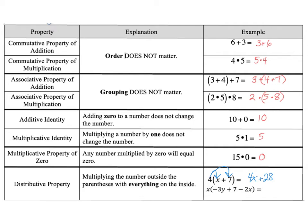We've got three terms on the inside. So that means our x on the outside is being multiplied three times. So x times negative 3y is negative 3xy. x times positive 7 is positive 7x. And then x times negative 2x is negative 2x squared.